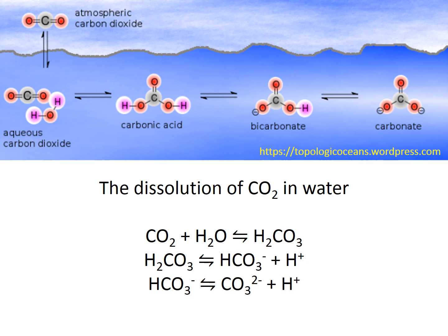Carbon dioxide gas dissolves in water like any other gas. Rather than just being CO2 molecules floating around surrounded by water molecules, there's actually a chemical reaction where CO2 reacts with water to form carbonic acid (H2CO3). These are equilibrium reactions, going backwards and forwards. Carbonic acid is a very unstable molecule in water, so it breaks apart very rapidly to form bicarbonate (HCO3⁻), releasing a hydrogen ion.